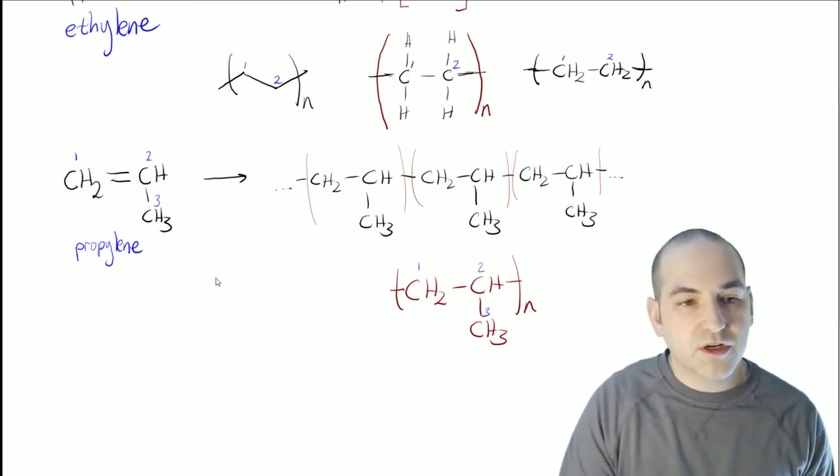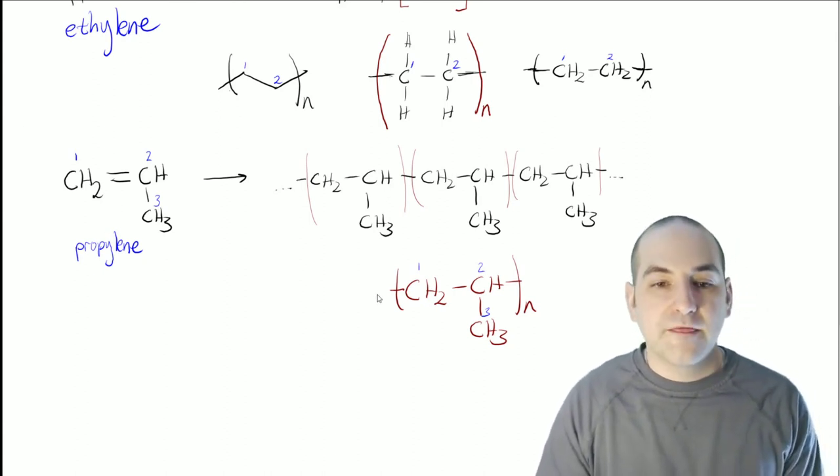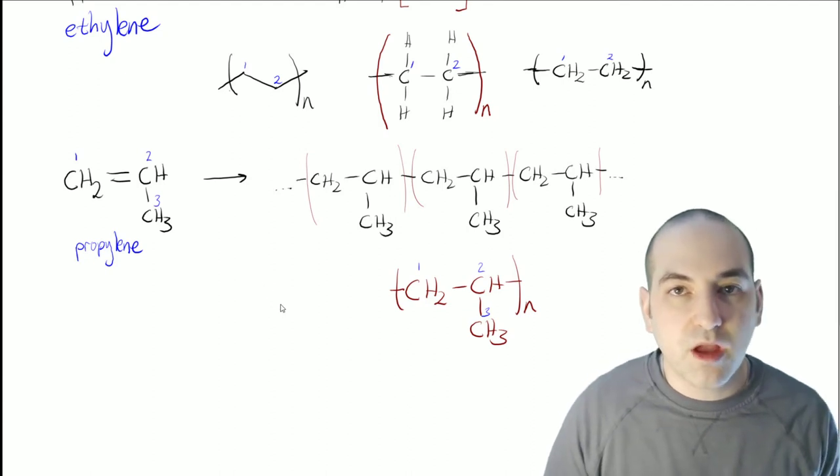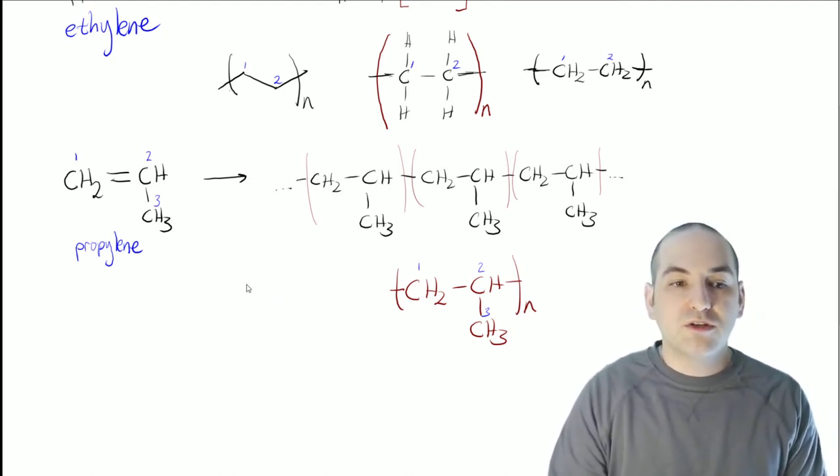So when we try this in a line structure, we want to keep that one, two, three, but recognizing that the repeating is only coming from one and two. So to make sure we do that right, let's just draw one and two first, just as we did up here at ethylene.